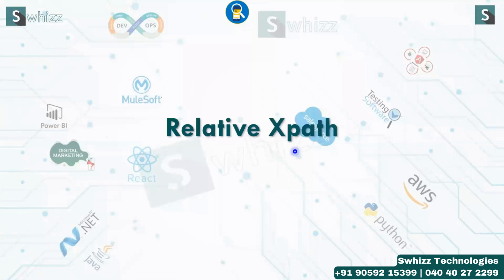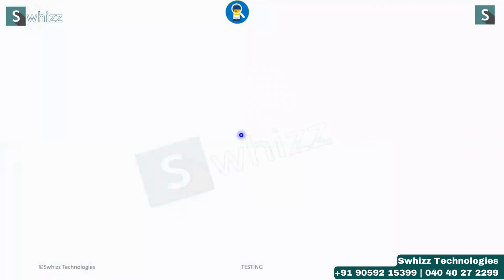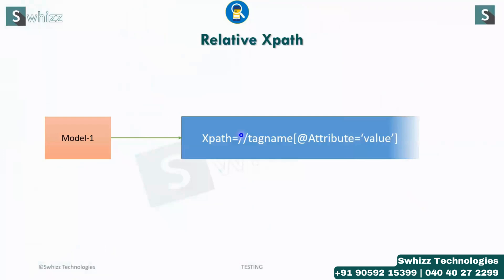To write this relative XPath, we have to remember the syntax, and that syntax we can also write in different models. The name itself — relative XPath — or we can also call this a customized XPath.